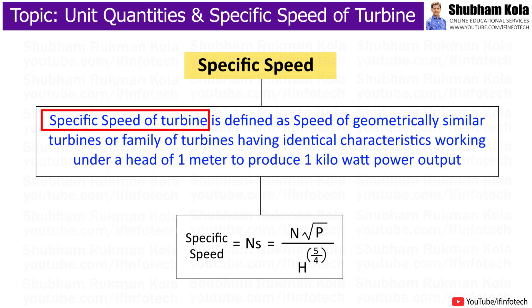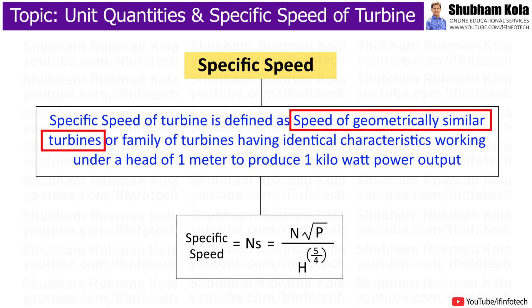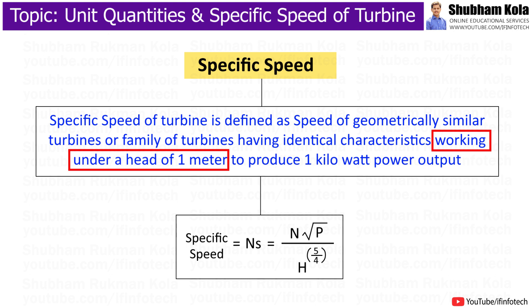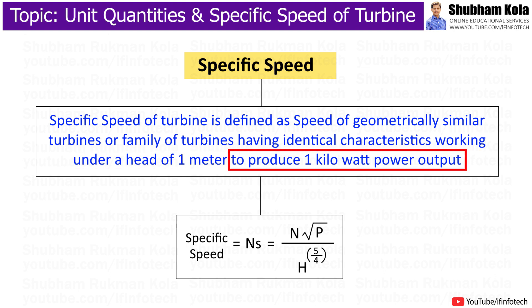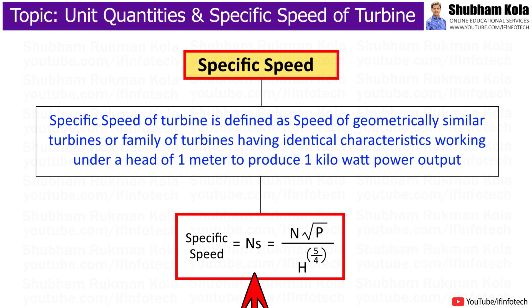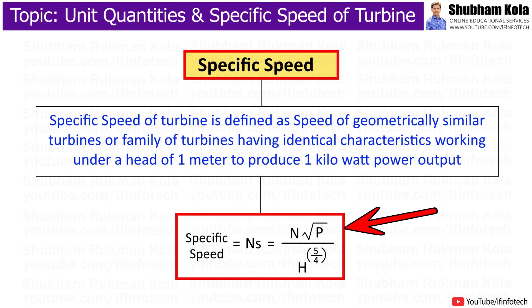Specific speed of a turbine is defined as the speed of geometrically similar turbines, or a family of turbines having identical characteristics, working under a head of 1 meter to produce 1 kW power output. The specific speed of a turbine is given by the formula: Ns equals N multiplied by the square root of shaft power, divided by net head H.